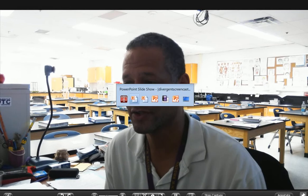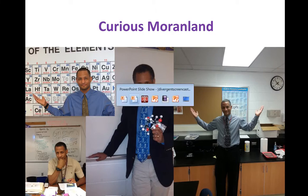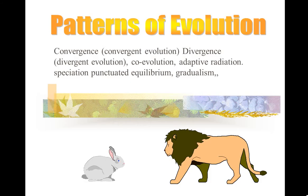Three organisms — which of the three are more closely related? A dolphin, a shark, and a human. If you want to pause for a second to figure that out, or watch the video and you'll find out the answer later. Brought to you by Curious Moranland. What I want to do in this video is talk about patterns of natural selection.